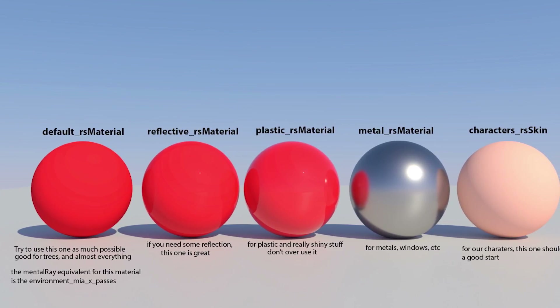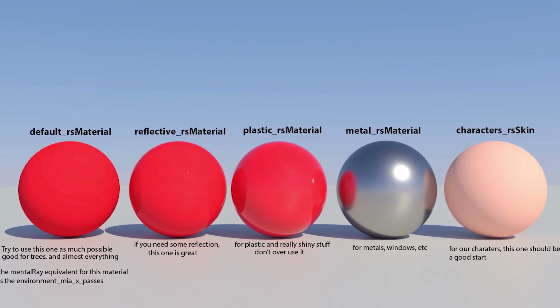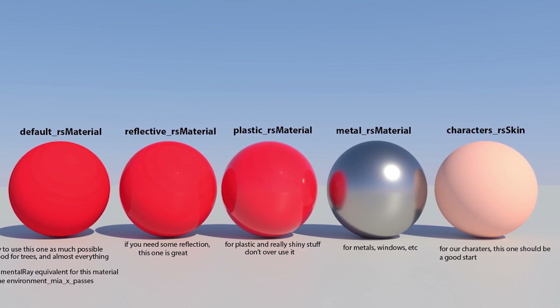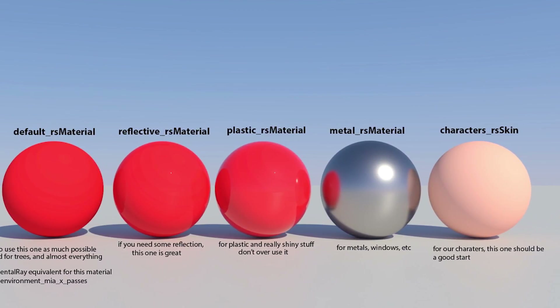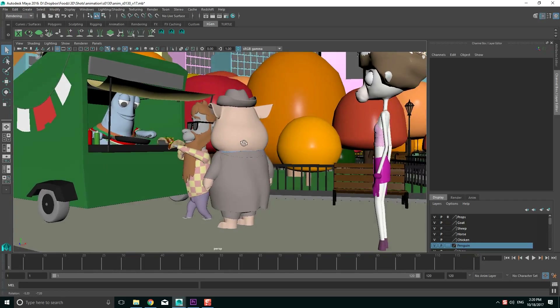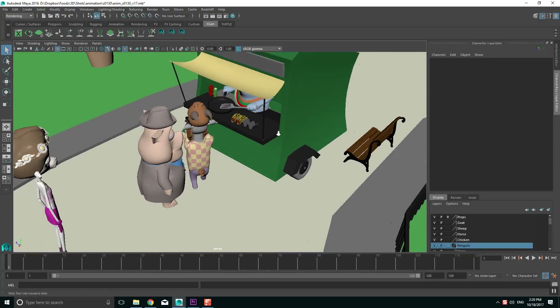We basically used five different shaders for all the objects in the film: one was our default material used for most objects; one was like the default but with a little bit of reflection; one that is much more reflective for a more plasticky look; one for metals; and one for skin. Even though many characters don't really have skin — but rather fur, feathers, or scales — we used that material for all of those purposes, since we're not really going for realism.